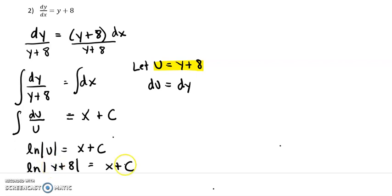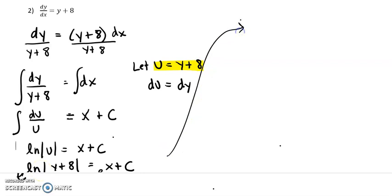Our goal is to get y by itself and x by itself. x looks by itself already, but y is not quite there. To get rid of the ln, we need to raise everything to the power of e. On the left-hand side, e to the ln just essentially cancels out the ln, so that becomes y plus 8.